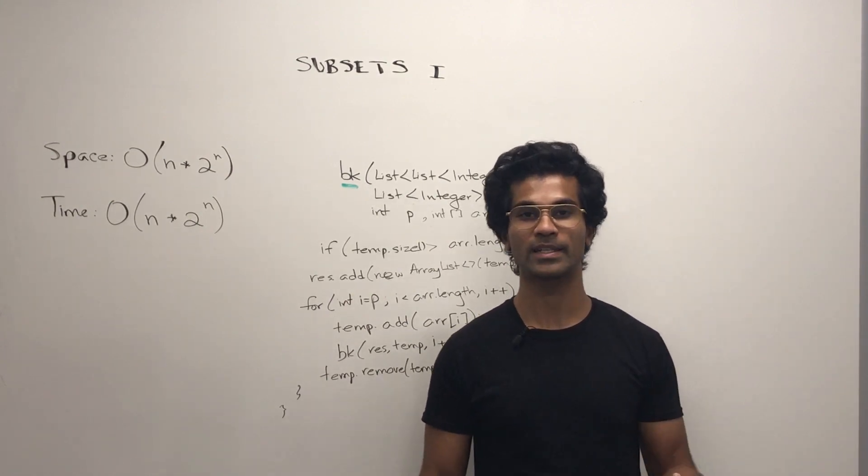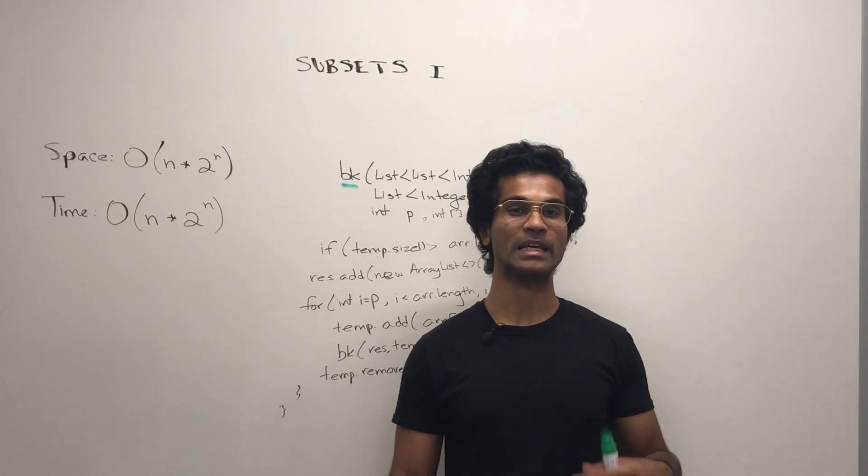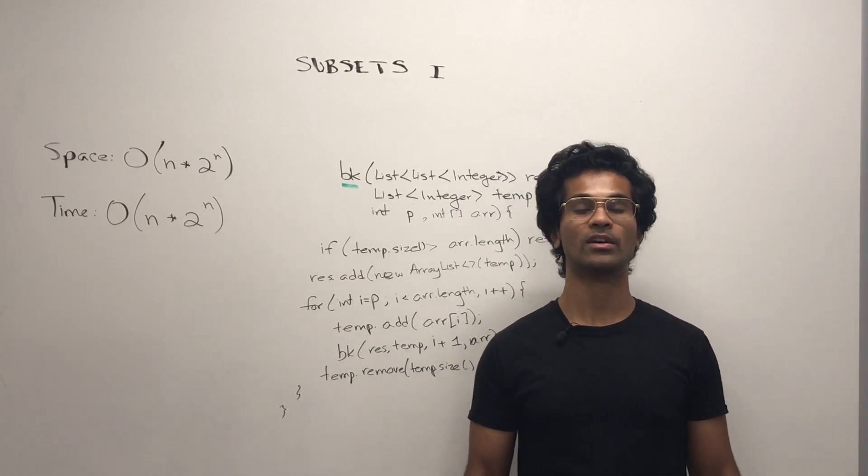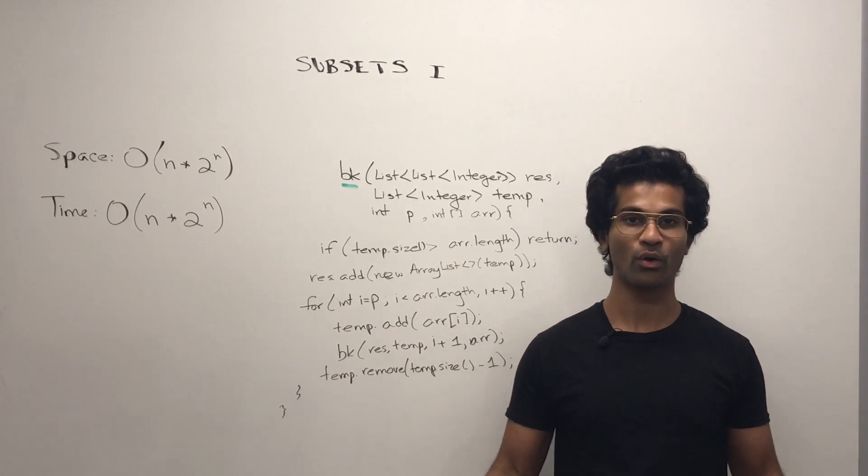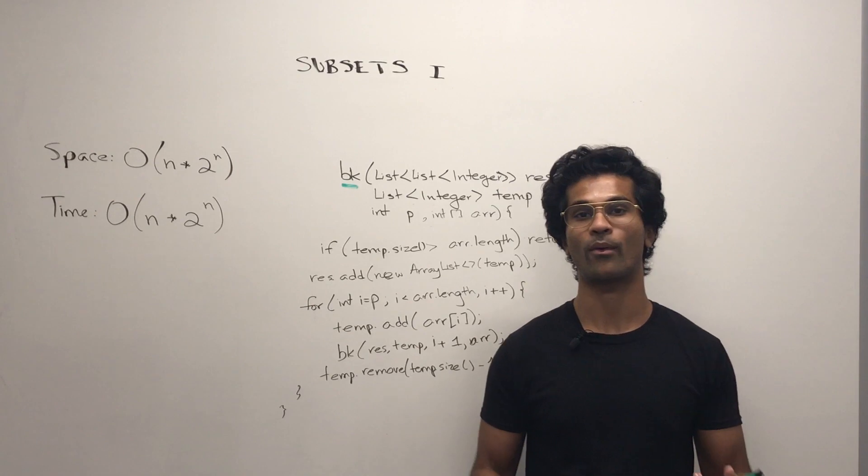So because it's binary, meaning we either take or not take something for a length of n, we're going to get 2 power n.